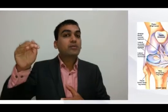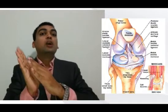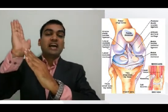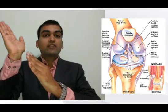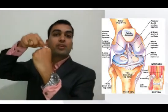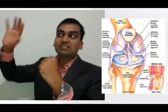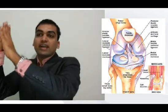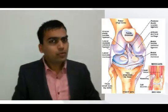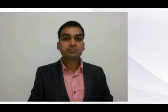This ligament originates from the anterior intercondylar fossa on the tibia and runs upward, attaching to the medial aspect of the lateral condyle of the femur. So it starts at the tibia and runs outward and upward toward the lateral condyle, attaching to its medial surface. If you remember your biomechanics, you would directly reach the conclusion: this is the anterior cruciate ligament — ACL. That's the first part solved.